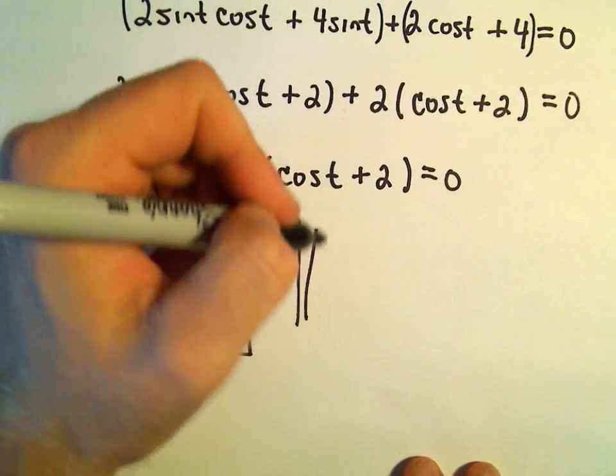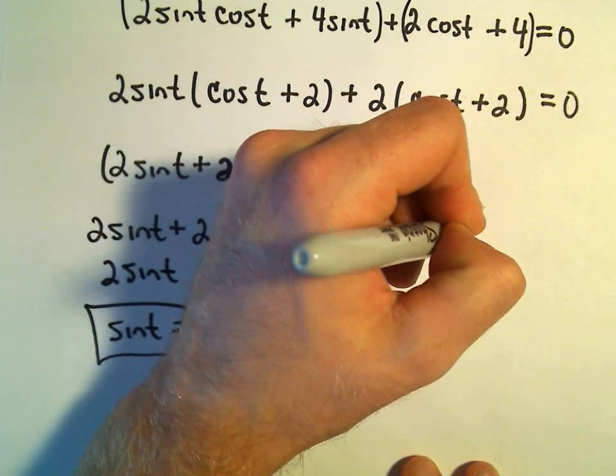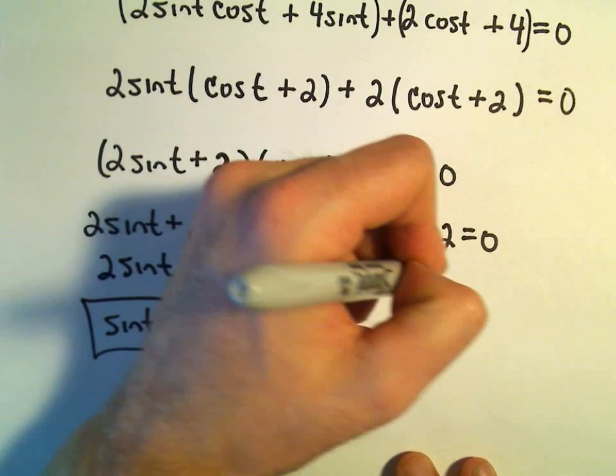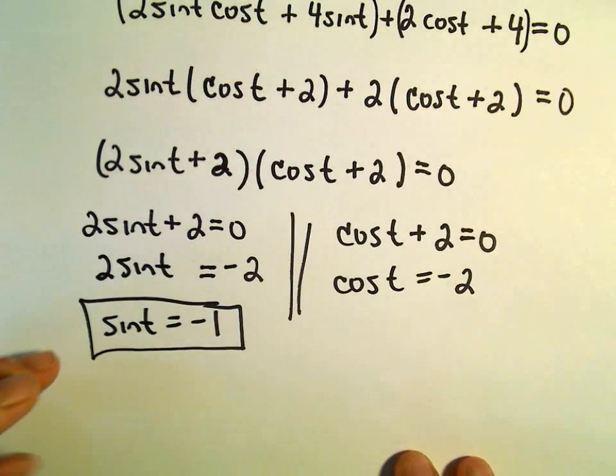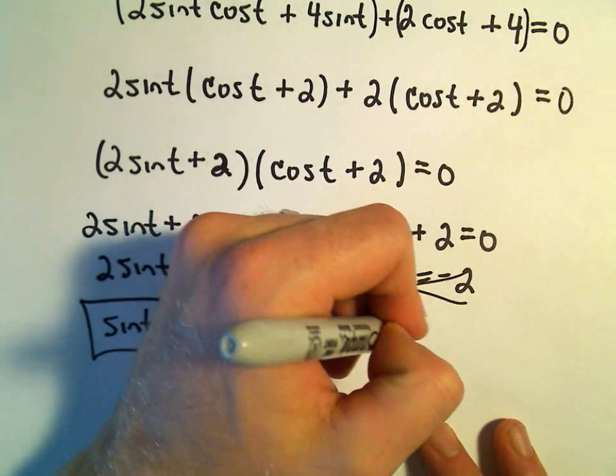Our second equation, well, if we take cosine of t plus 2 and set that equal to 0, well, when we subtract the 2, we'll get cosine of t equals negative 2. This is outside of the range of cosine. Again, so this equation simply has no solutions.